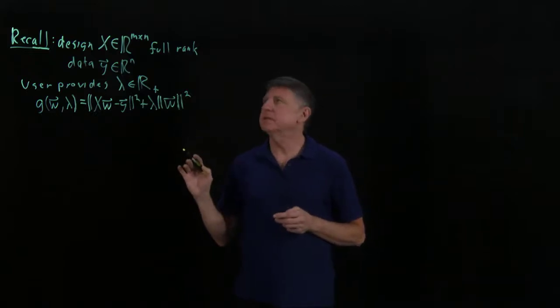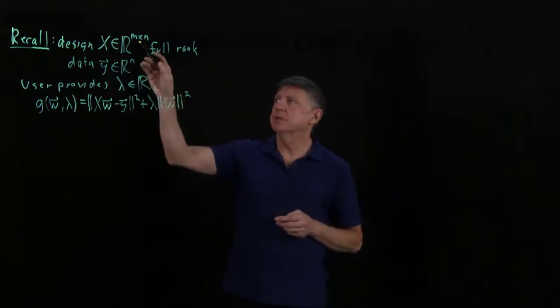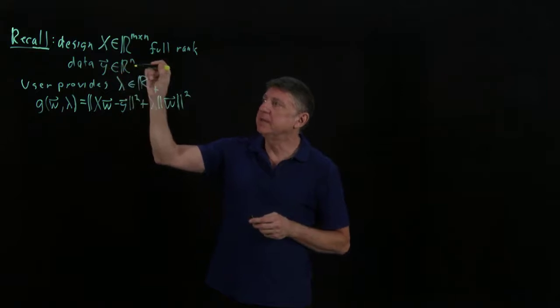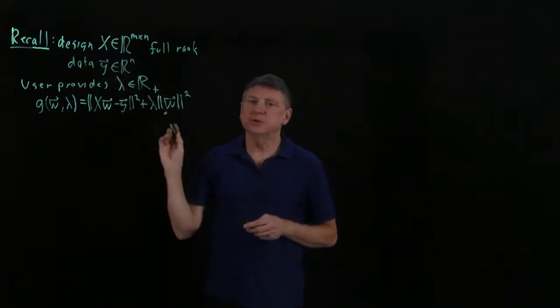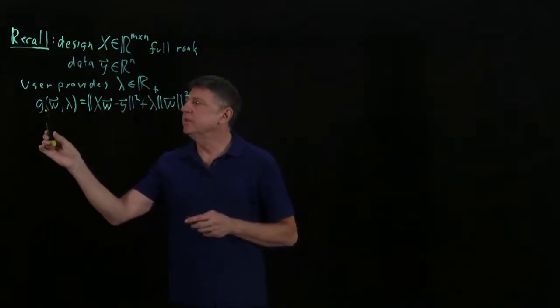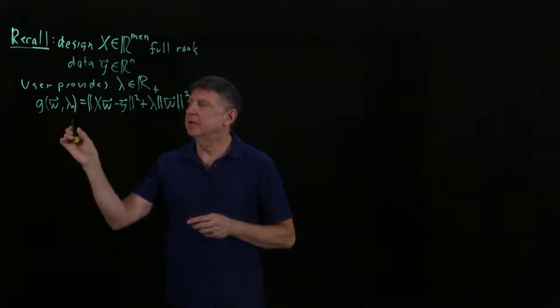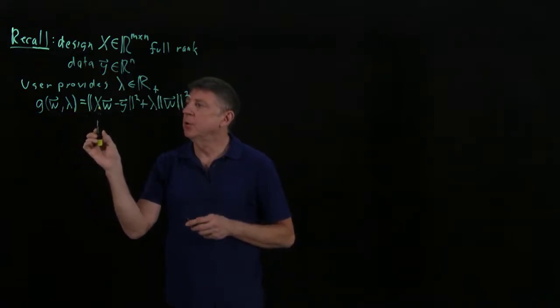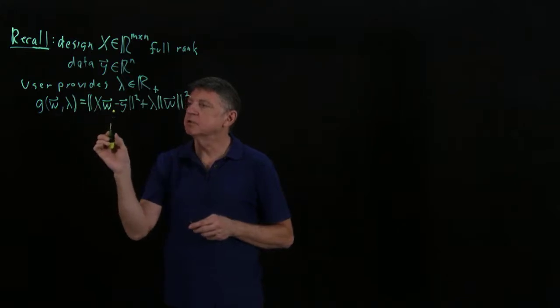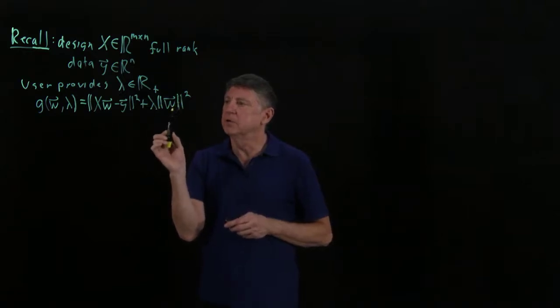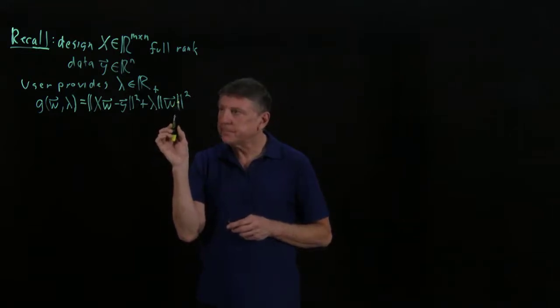Let's recall from the previous session that we have a design matrix X with m rows and n columns, a full-rank matrix. We have dependent data provided in a vector y, and the user provides a non-negative value lambda. We said we could form a function g with a vector argument, where lambda is a hyperparameter. g was the squared norm of the residual error plus lambda times the squared norm of the argument vector.